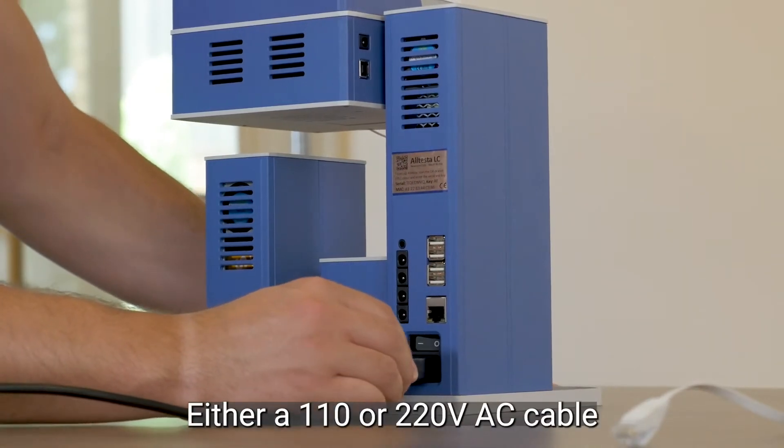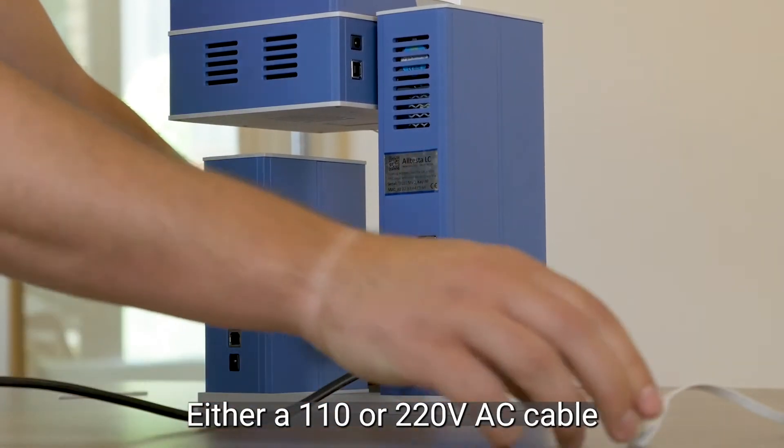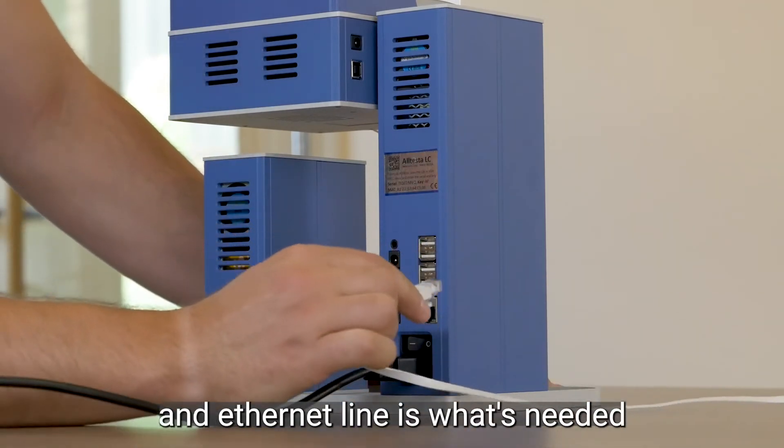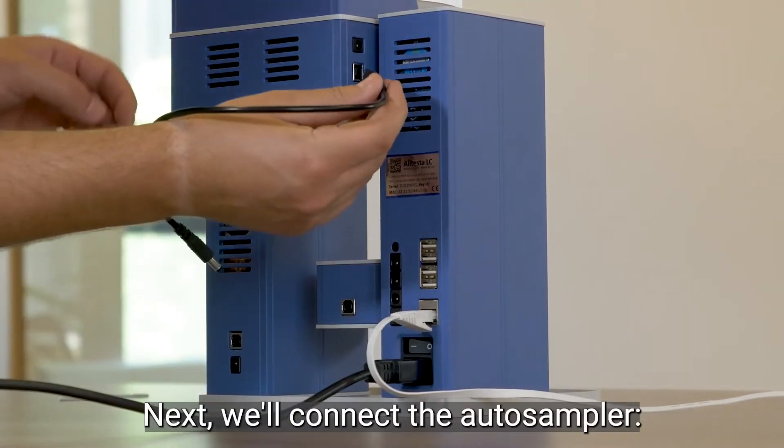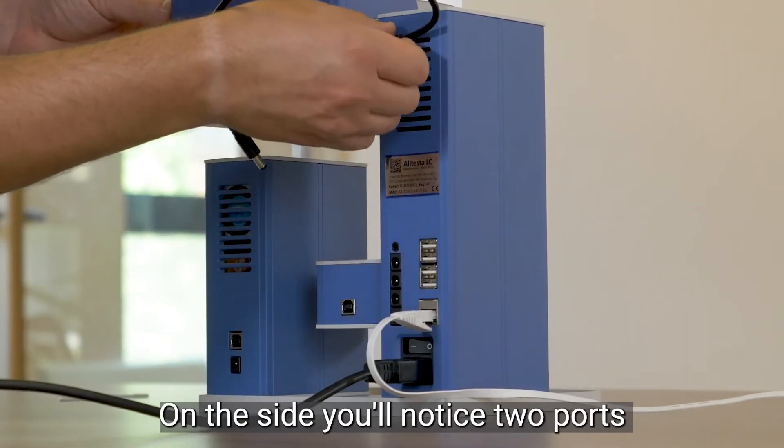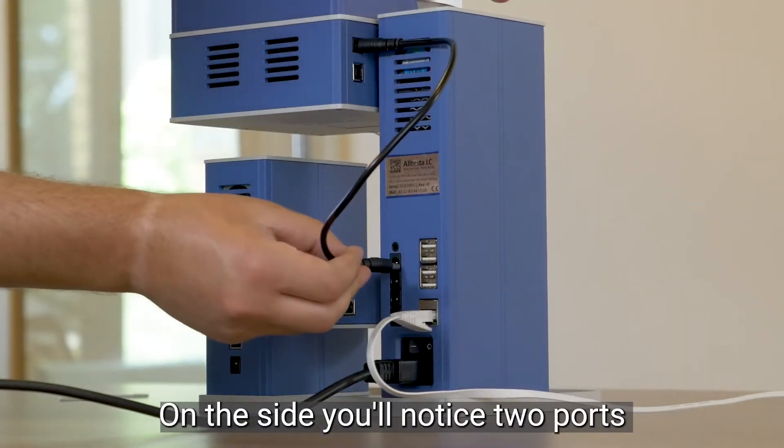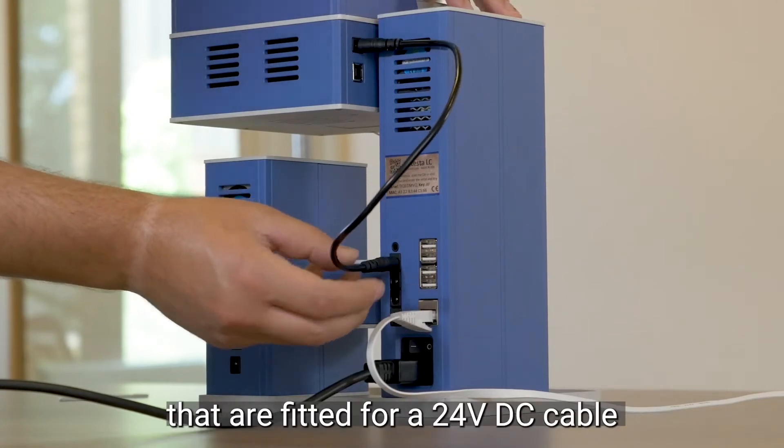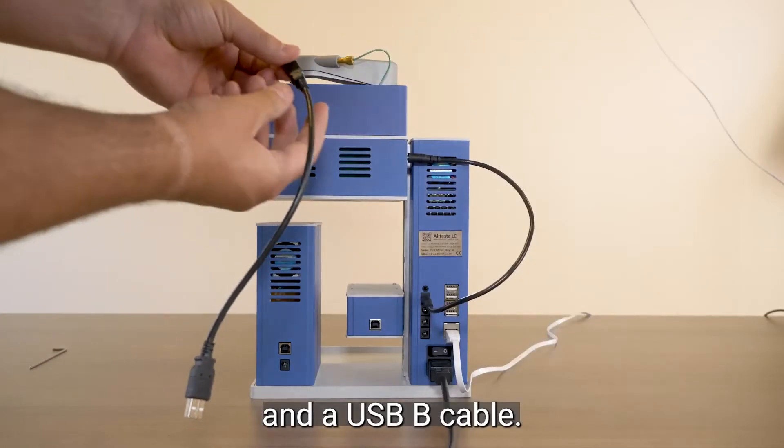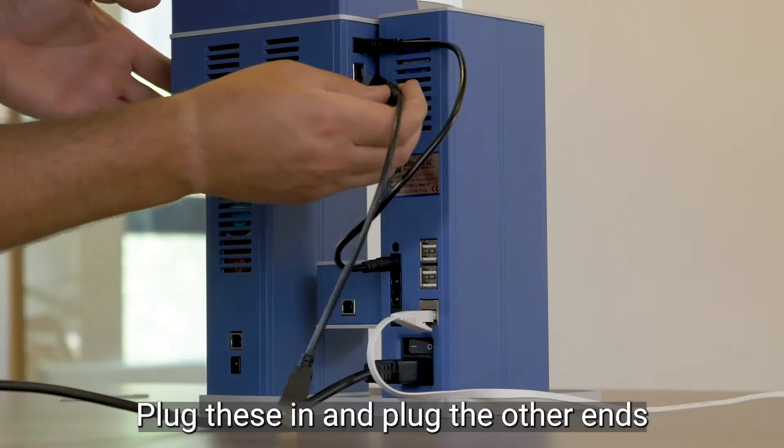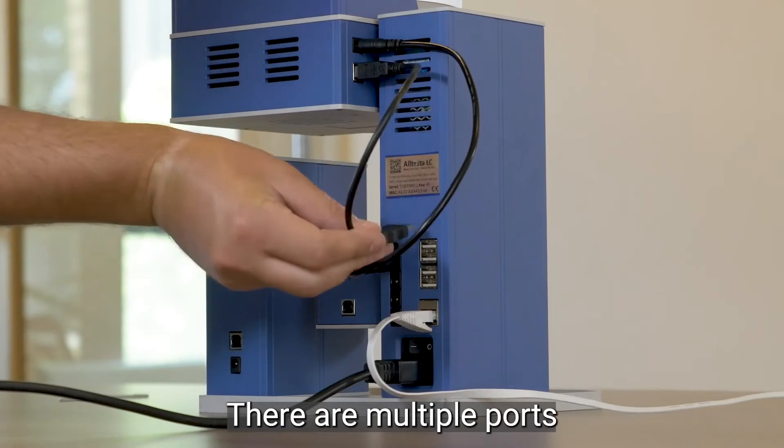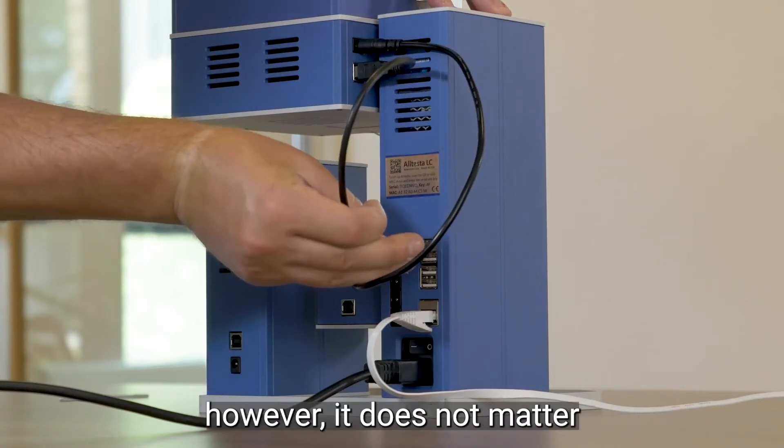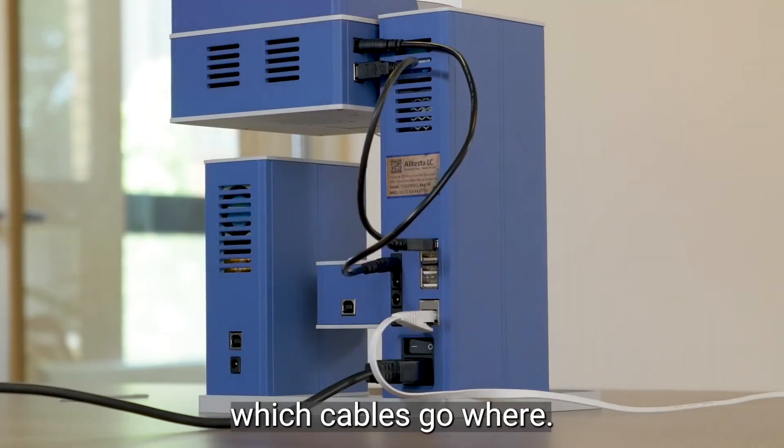Either a 110 or 220 volt AC cable and Ethernet line is what's needed to power this system. Next, we'll connect the Auto Sampler. On the side you'll notice two ports that are fitted for a 24 volt DC cable and a USB-B cable. Plug these in and plug the other ends into the back of the power tower. There are multiple ports on the back of this tower. However, it does not matter which cables go where.